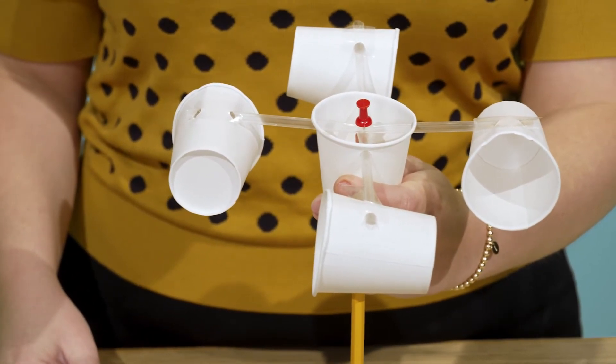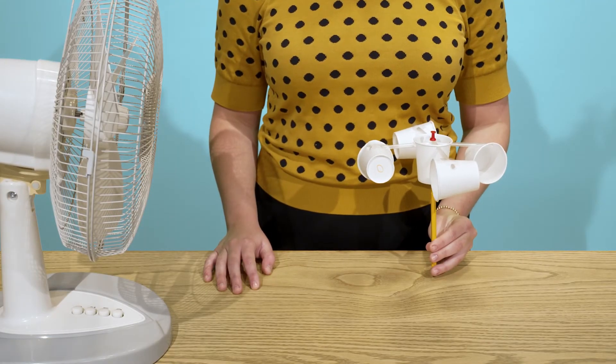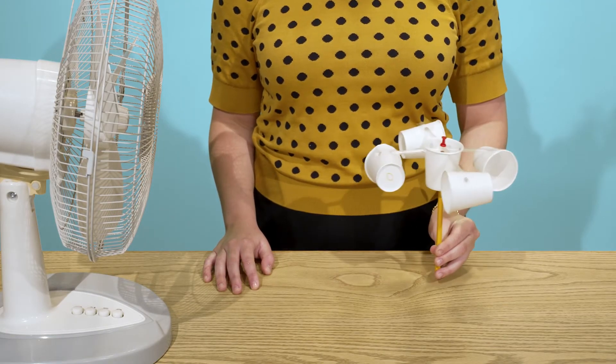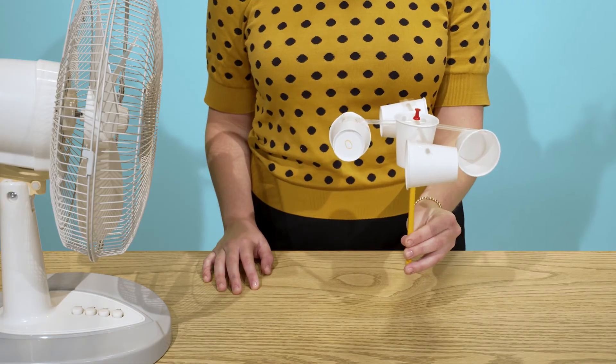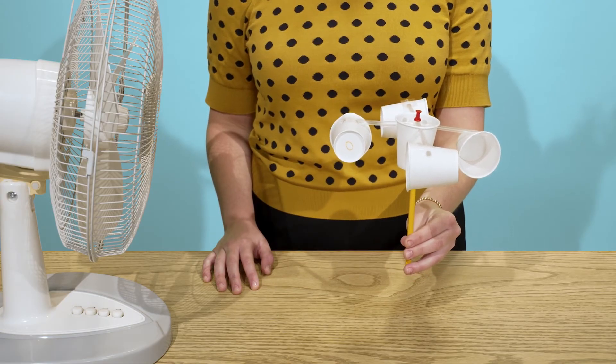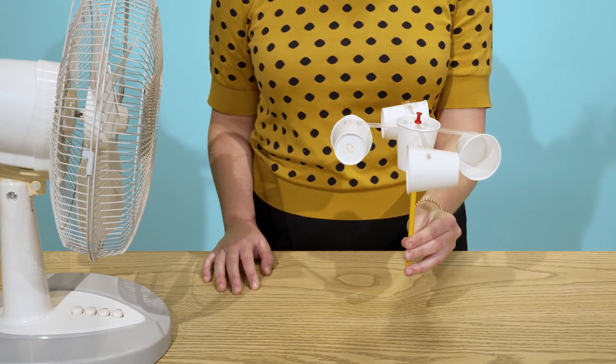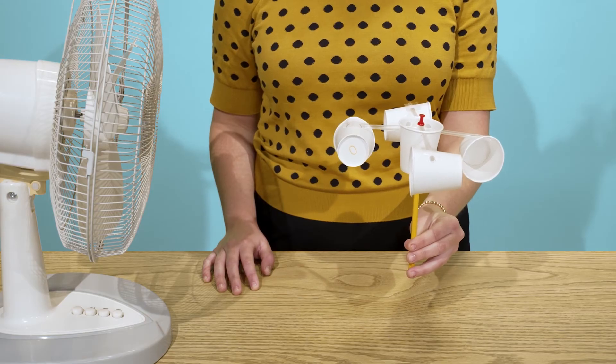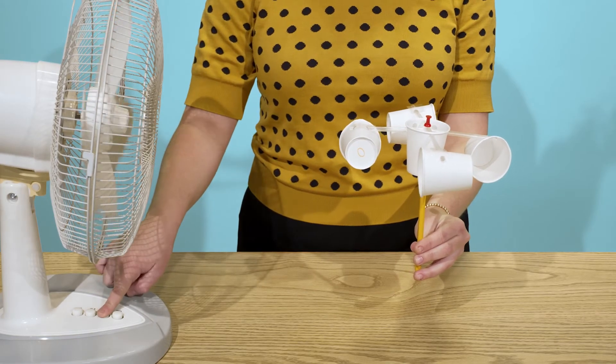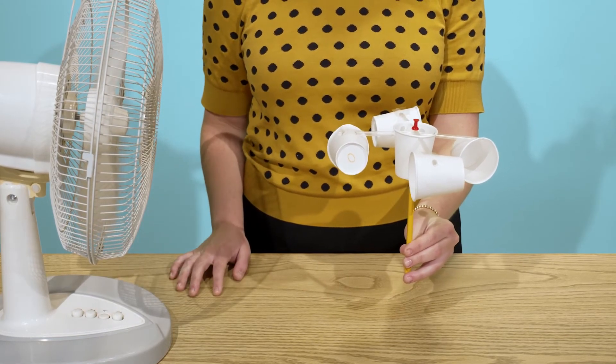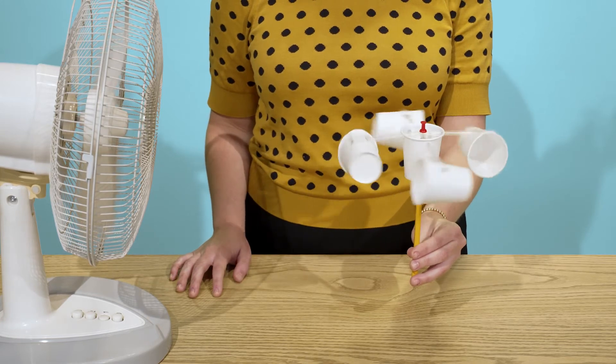You're now ready to measure the wind, so let's test your anemometer to make sure it's working properly. Stand about one foot in front of a fan, but stand to the side of the fan so you don't block any wind. Hold your anemometer by the pencil handle and reach it out so it's in front of the fan. Turn the fan on low and make sure your anemometer spins.